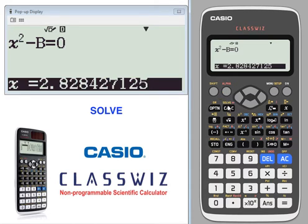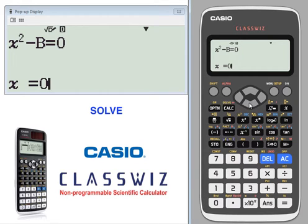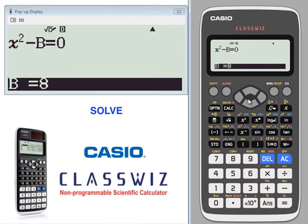Shift solve. Type in an initial value of x of 0. Use the arrow key down to get to b. We'll put the b value in as 4.